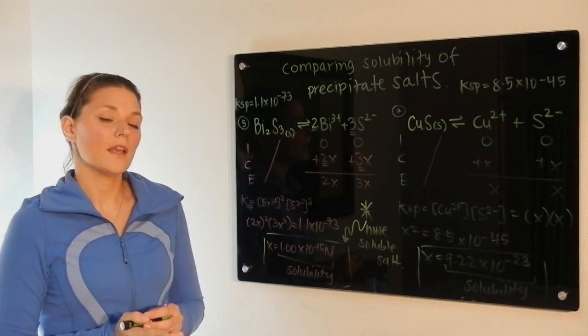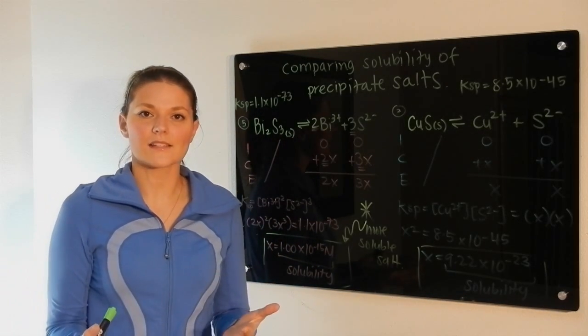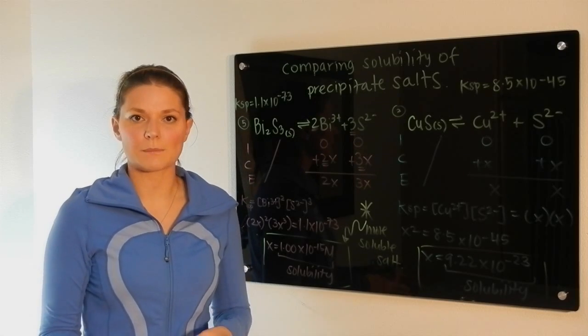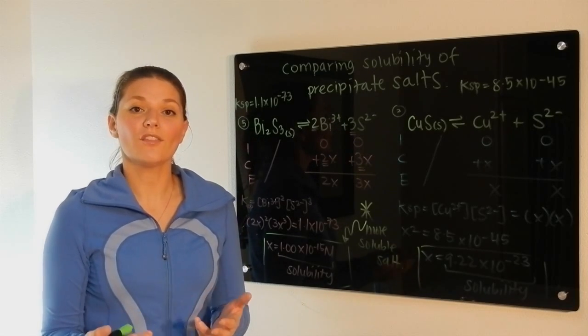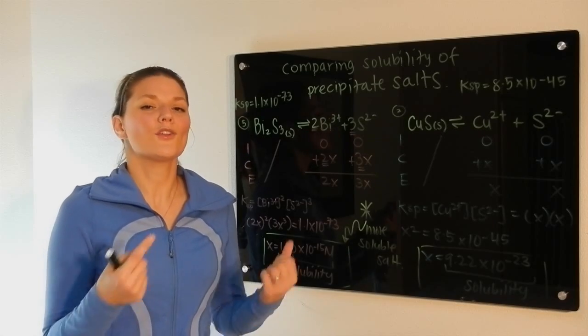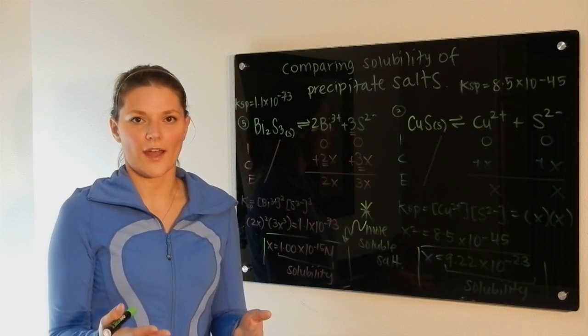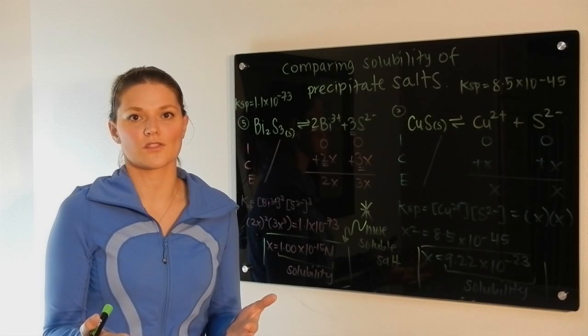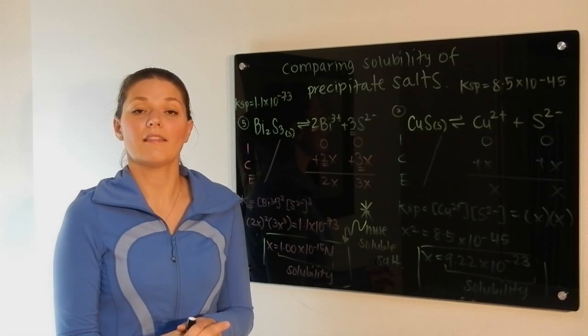So remember, if your two salts have exactly the same number of ions, then you can just compare the Ksp values right away. If they have a different number of ions in them, you're going to have to do the ICE chart, solve for X, and then compare those X values to make your final determination. And that's how you do it.